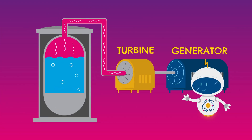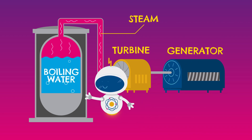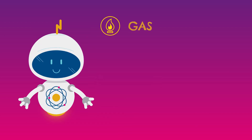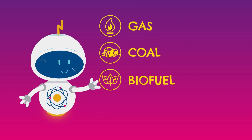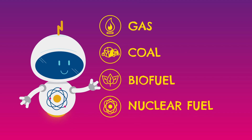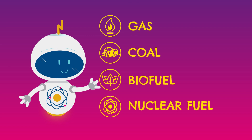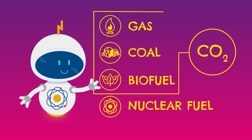When it is the steam turning the turbine, this is produced by boiling water. The water is heated using fuels such as gas, coal or biofuel, or by the energy released from nuclear fuel. Nuclear fuel doesn't create carbon dioxide gases like some other fuels do.